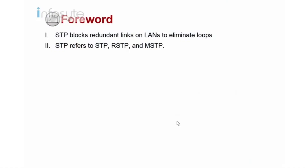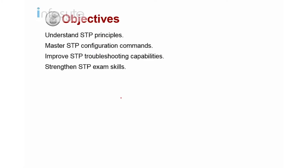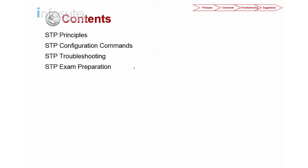Let's start the session now. In this topic we are going to look into how we can configure a redundant link yet eliminate loops. We are going to look into STP — specifically traditional STP, RSTP, and MSTP. After completing this video, we will understand the STP principle, the configuration, how to troubleshoot STP, and some STP tips.